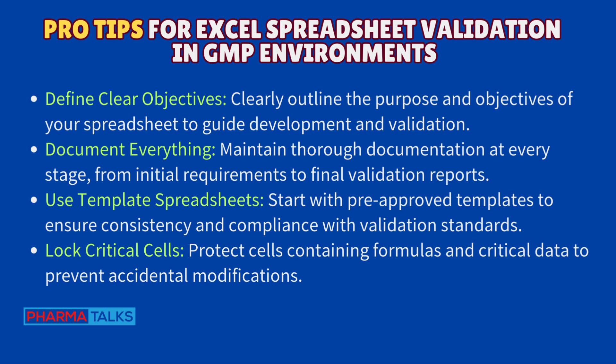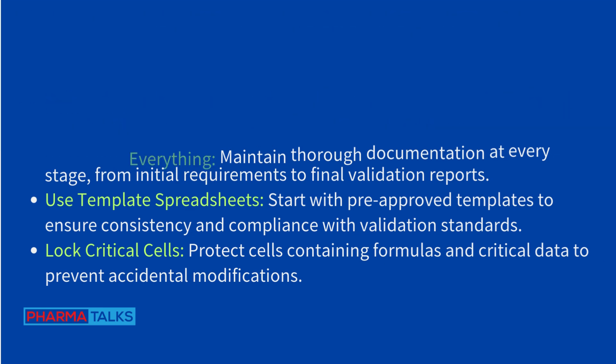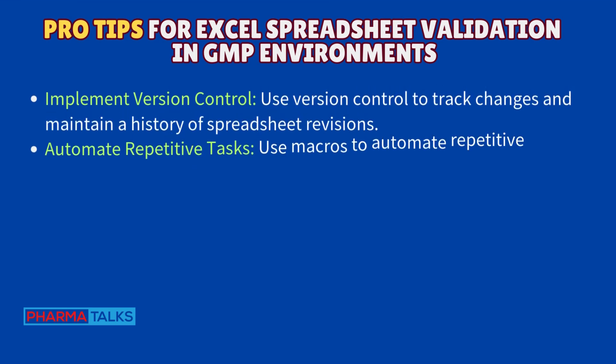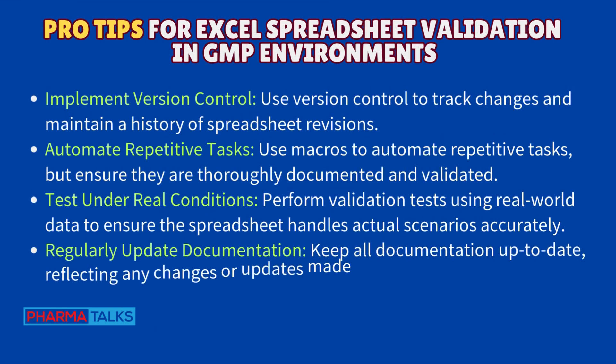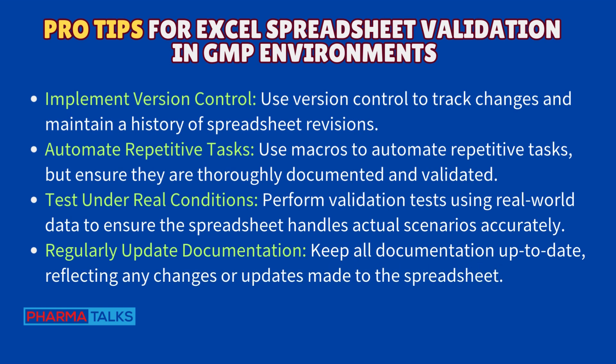Lock critical cells — protect cells containing formulas and critical data to prevent accidental modifications. Implement version control to track changes and maintain a history of spreadsheet revisions. Automate repetitive tasks — use macros to automate repetitive tasks, but ensure they are thoroughly documented and validated. Test under real conditions — perform validation tests using real-world data to ensure the spreadsheet handles actual scenarios accurately.